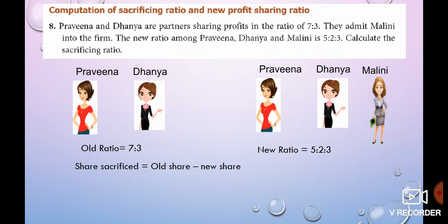Sum No. 8: Previna and Dania are partners sharing profit and loss in the ratio of 7 is to 3. They admit Malini into the firm. The new ratio among Previna, Dania and Malini is 5 is to 2 is to 3. So, we are talking about sacrificing ratio. Their old ratio is 7 is to 3. Old minus new shares is the sacrificing ratio.